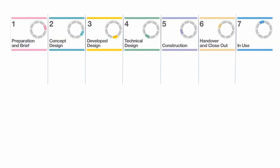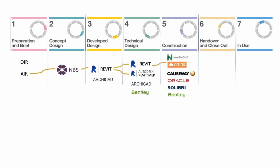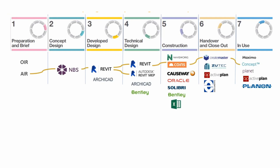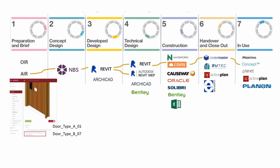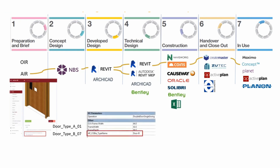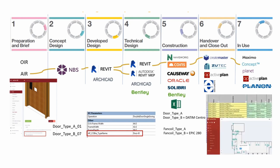BIM — Building Information Modeling — is related to the model itself, and there are a number of programs you can save it in, whether Tekla, Revit (probably the most common), Archicad, or others. As there are a number of different formats, it can be hard to swap data between services engineers, structural engineers, and architects. Another problem with modeling a building information model, especially for final delivery to the client, is that files become impossible to open after more than 10 years.